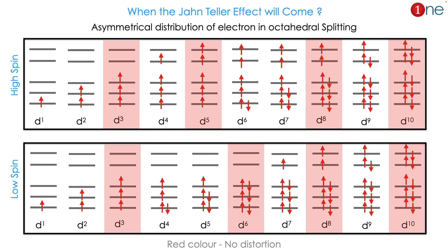d3 and d5 systems in high spin don't have any effect. Similarly, d10 also doesn't have any effect. So the electrons have to be asymmetrically filled for the Jahn-Teller effect.